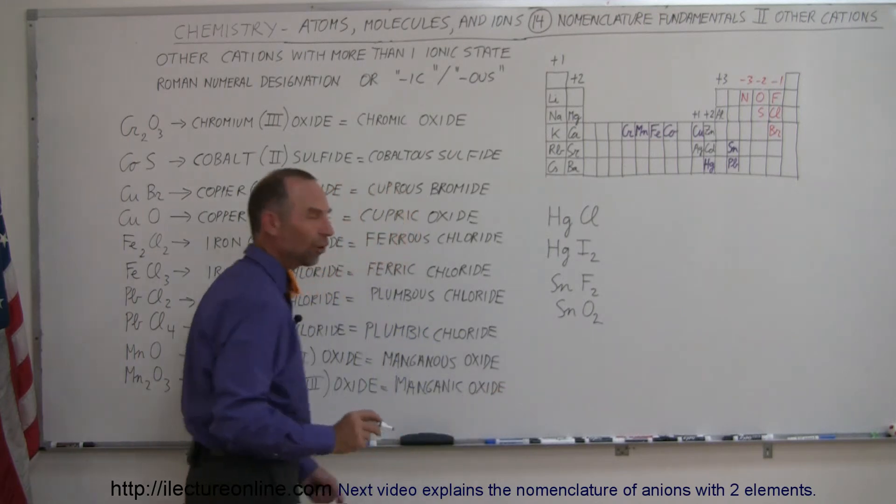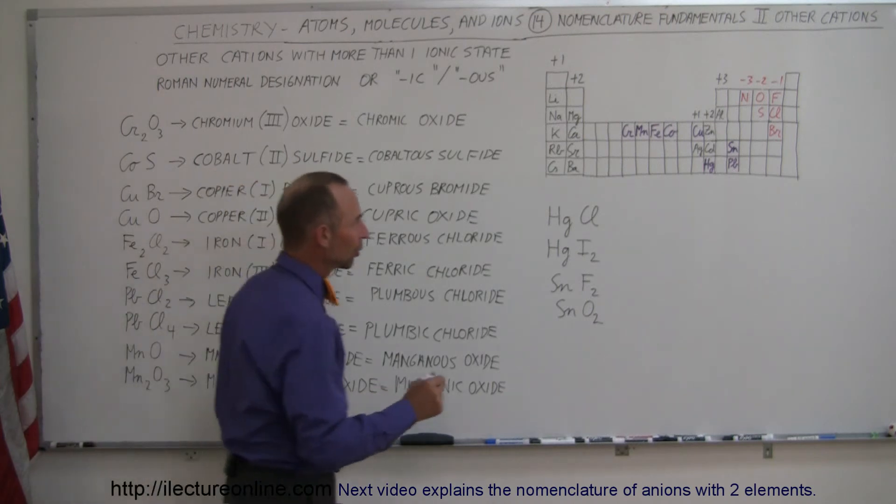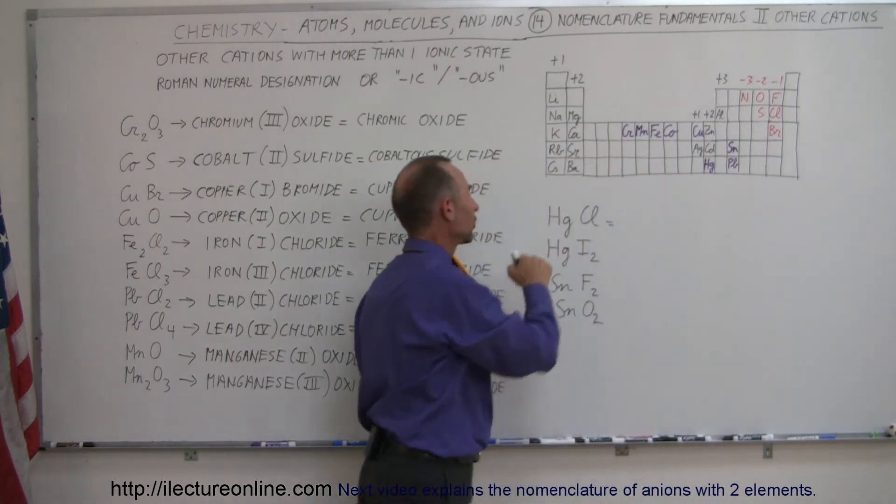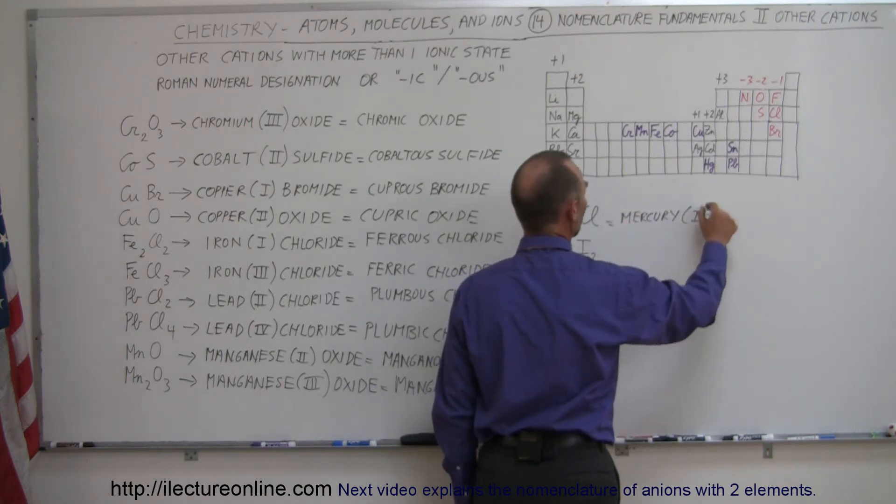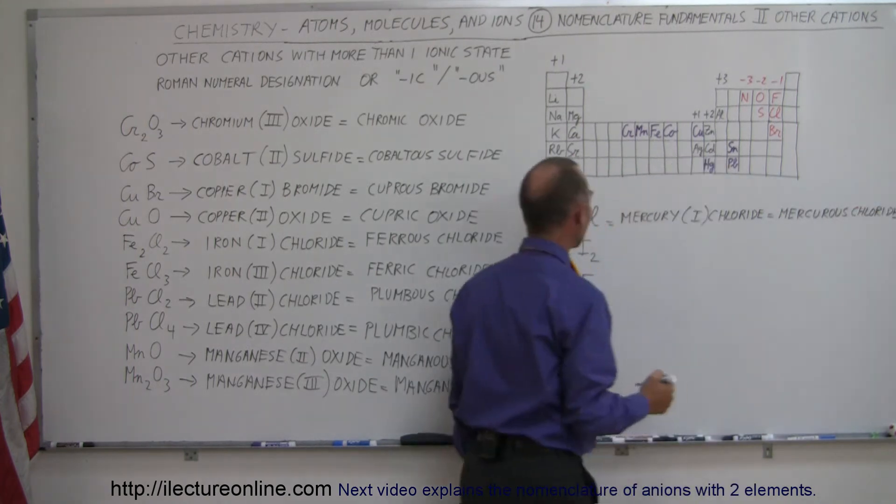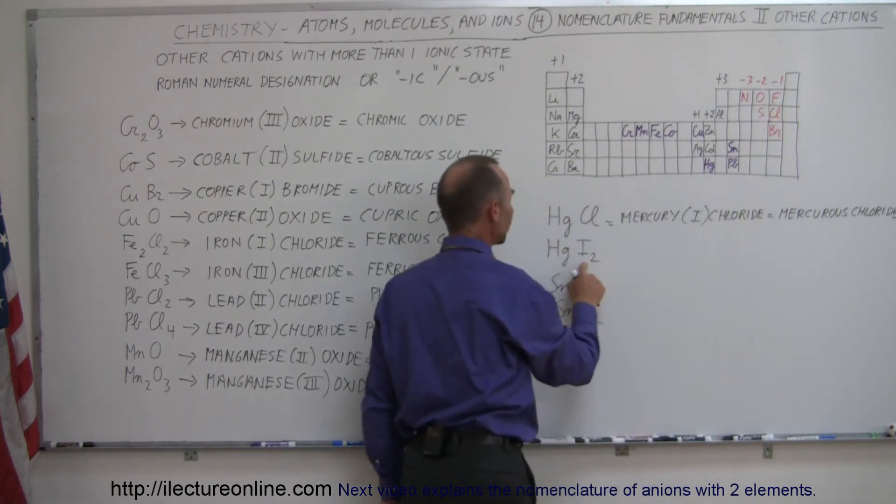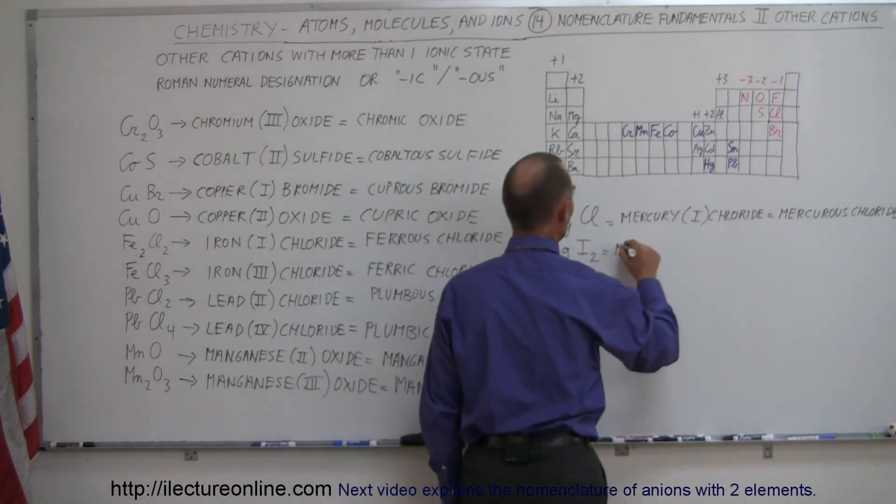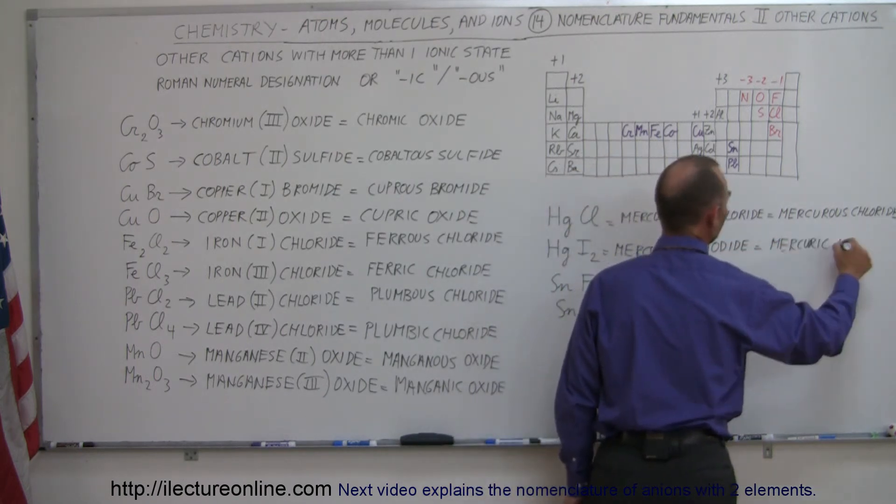So hopefully with all these examples you're starting to get the feeling of how to do this. So now we have mercury and chlorine. Chlorine is at the minus one state, so mercury has to be at the plus one state, so this would be mercury one chloride or mercurous chloride. Next we have mercury and iodine. Iodine is at the minus one state, but there's two of them, so this is a total of minus two. Therefore mercury is ionized to the plus two state, so this would be mercury two iodide, which is equal to mercuric iodide.